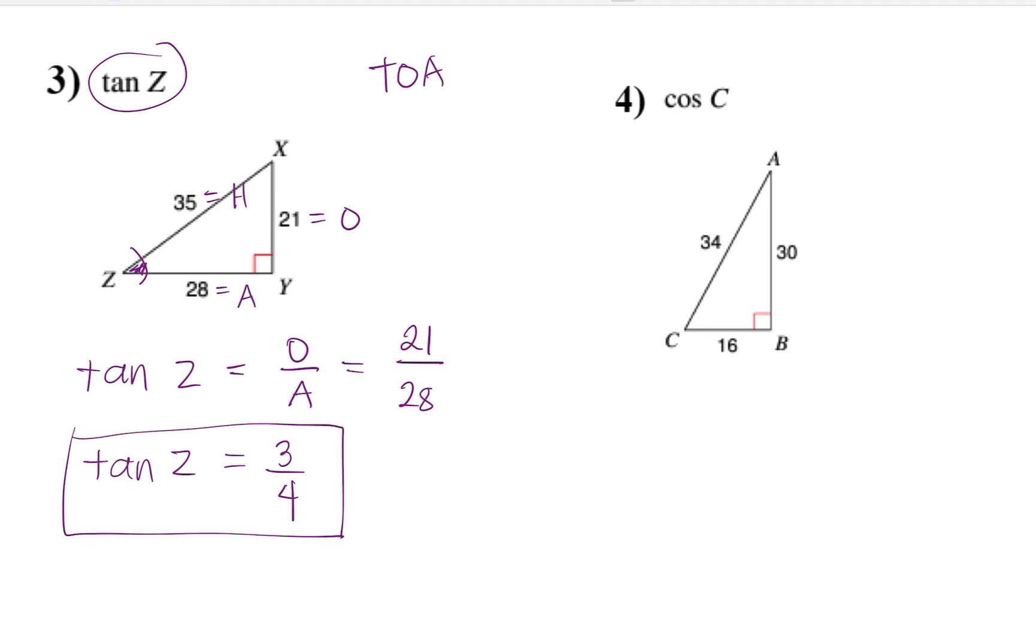And the last one, which is cosine C, and reference angle is C. So 30 is O, 34 is H, and 16 is A. So cosine refers to the CAH in our formula. So we are going to write cosine C equals adjacent over H, and adjacent side is 16, hypotenuse is 34, simplifying 16 over 34, that should give us 8 over 17.